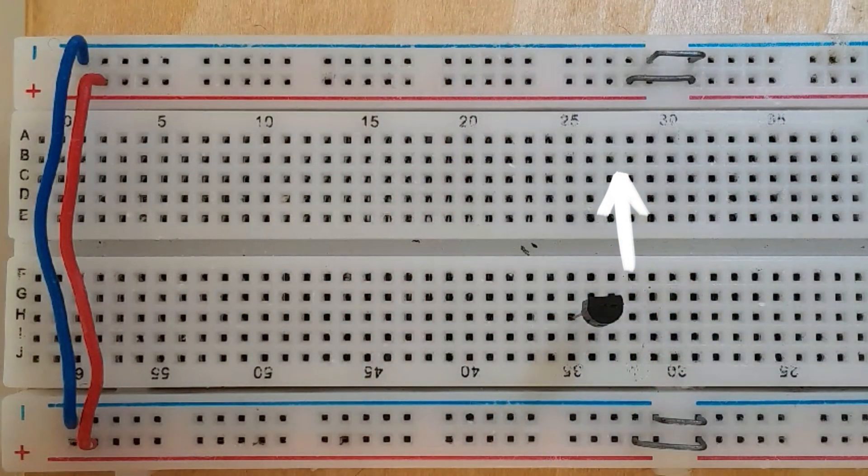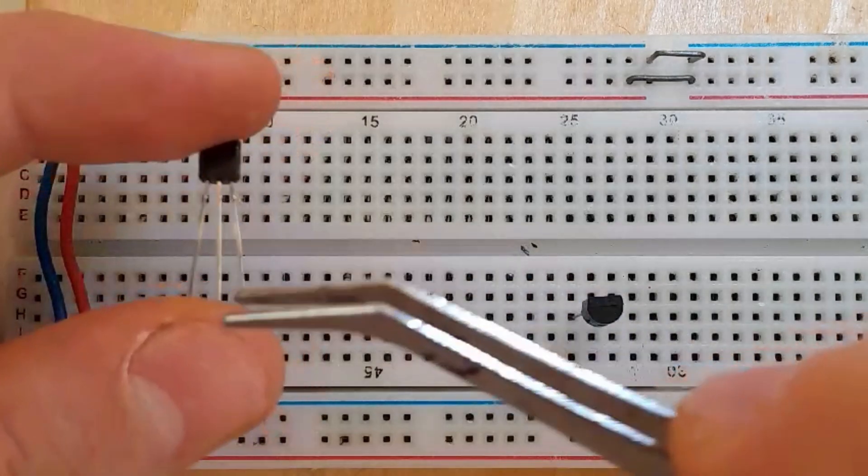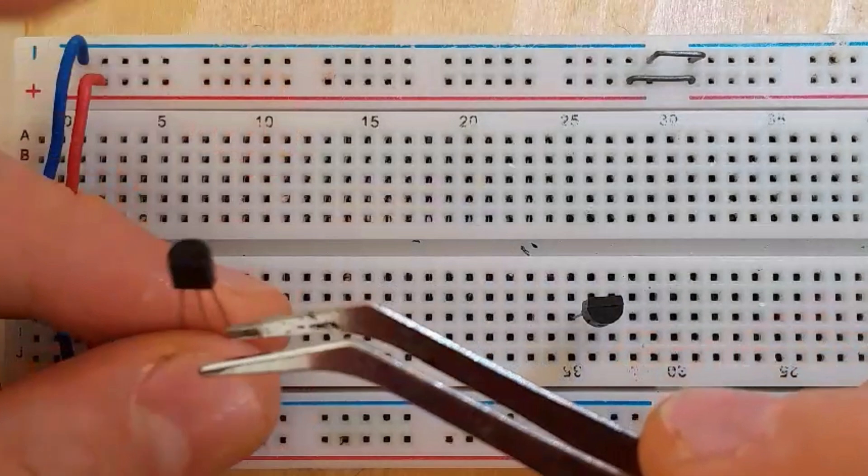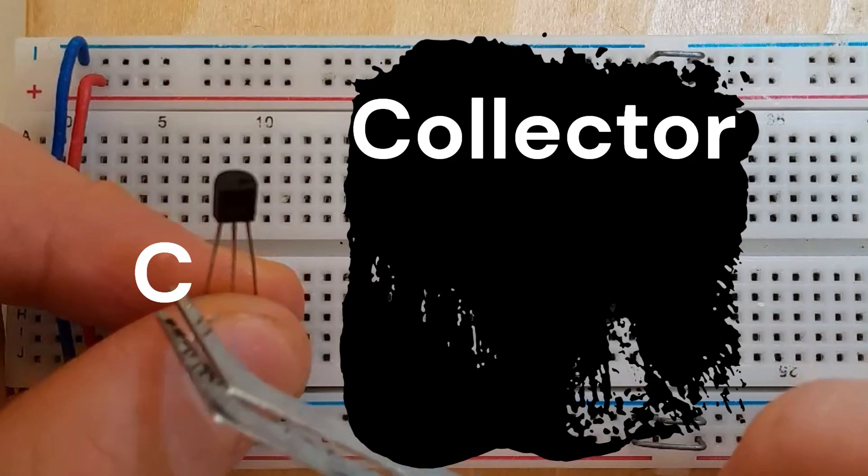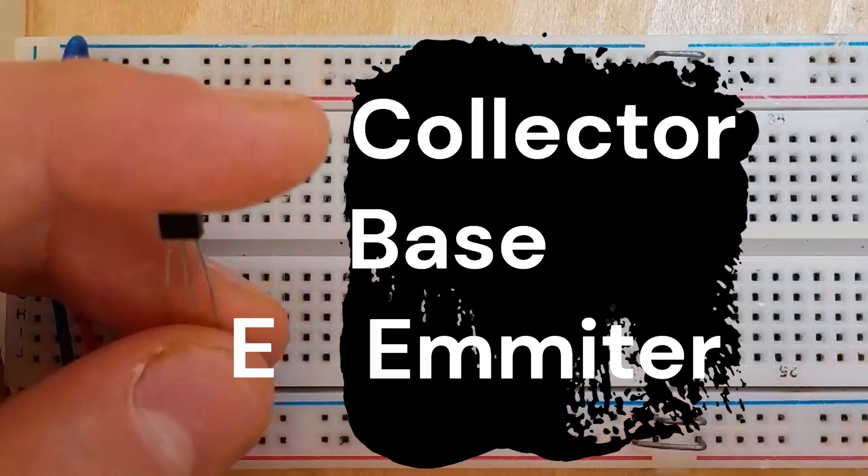Just in case, I'm going to let you know what each leg name is. The first one is collector, and the second one is base, and the third one is emitter.